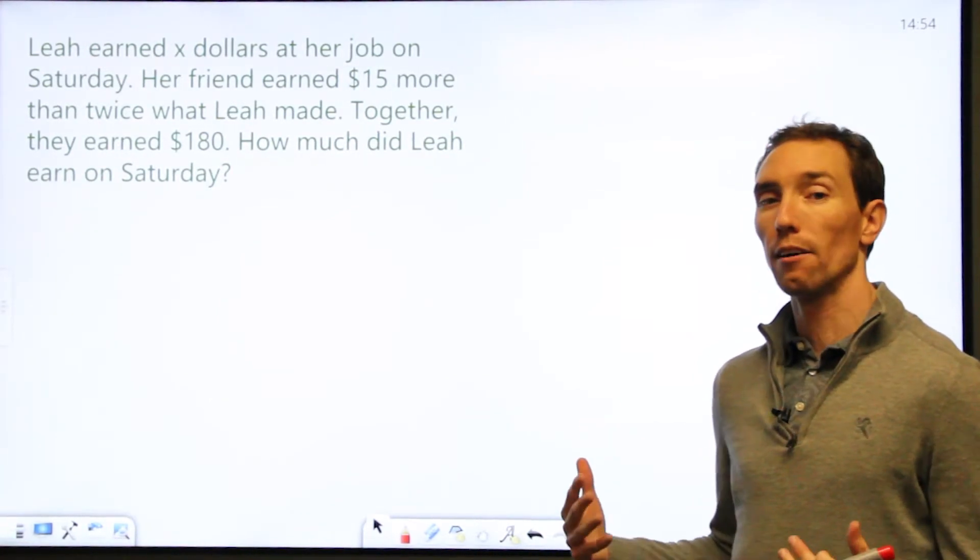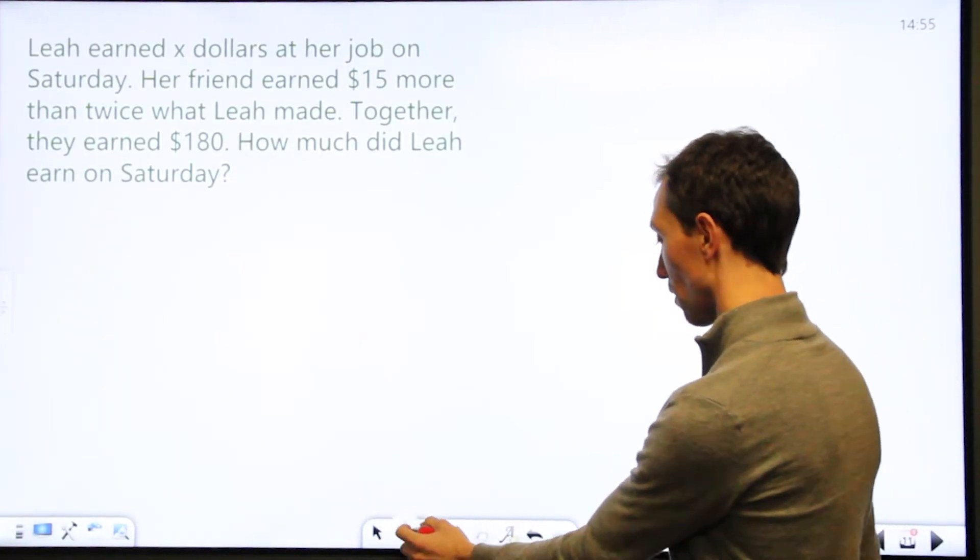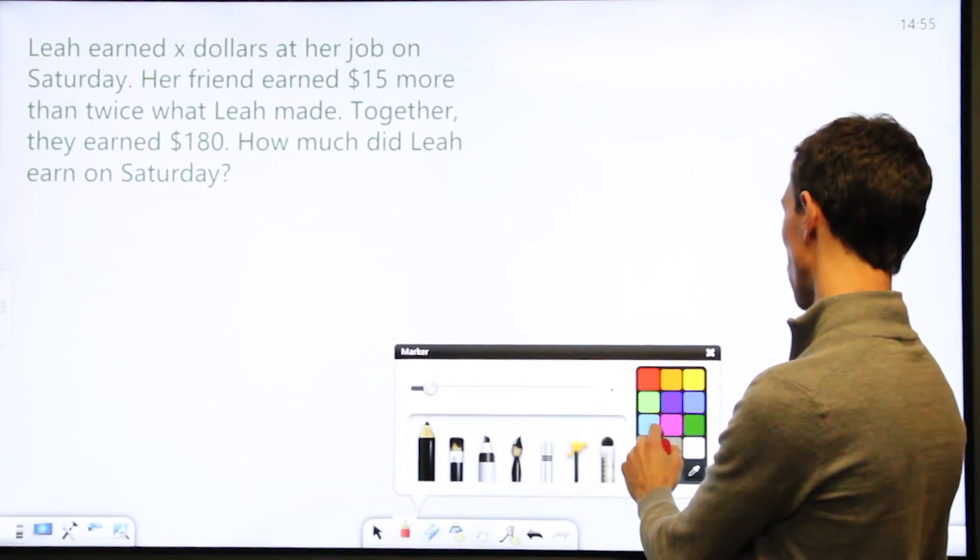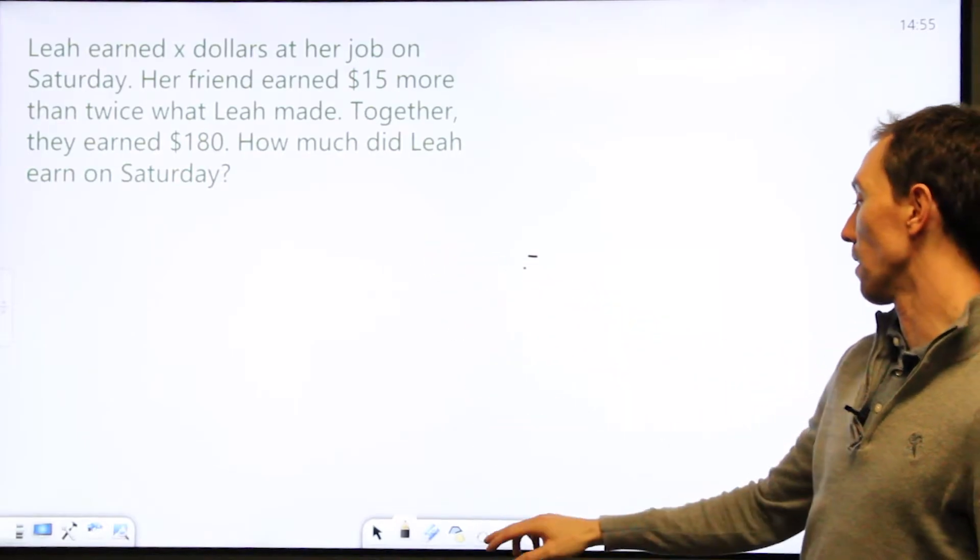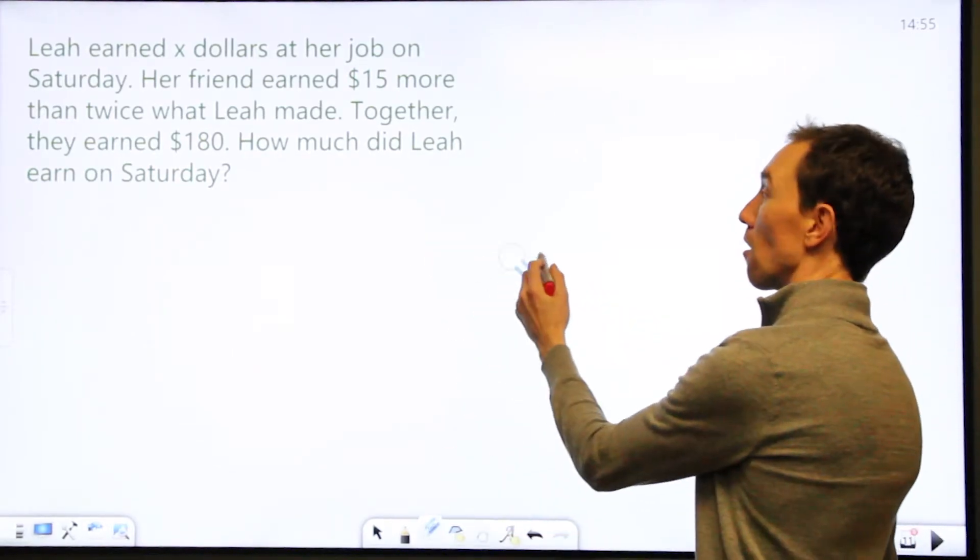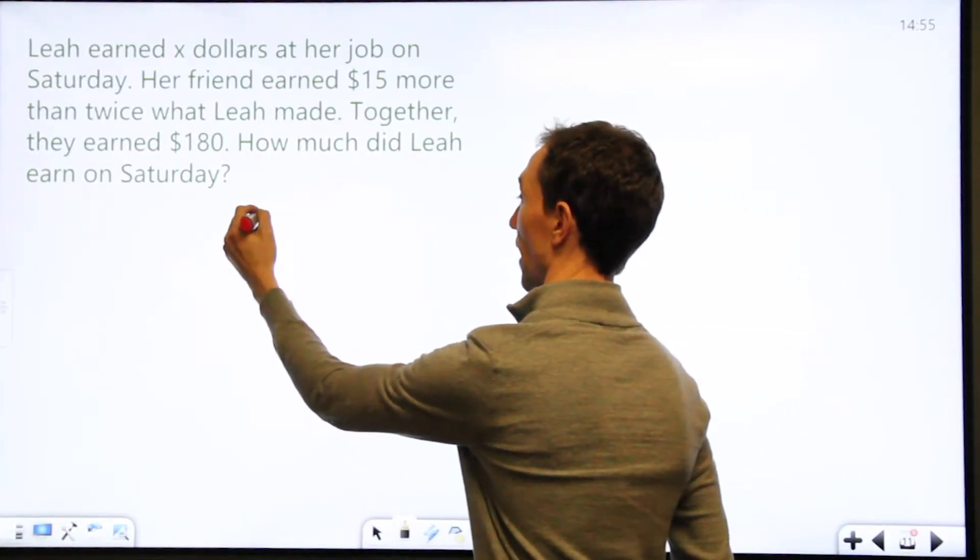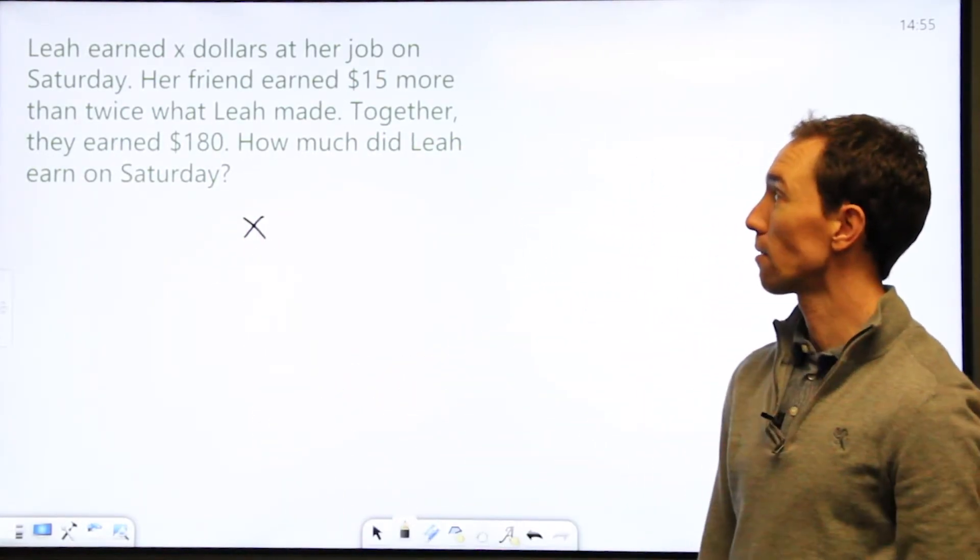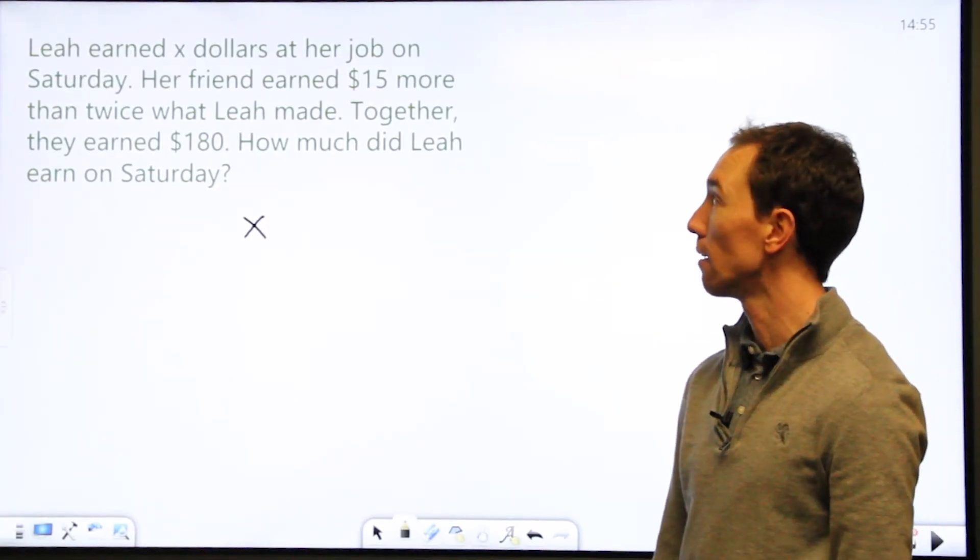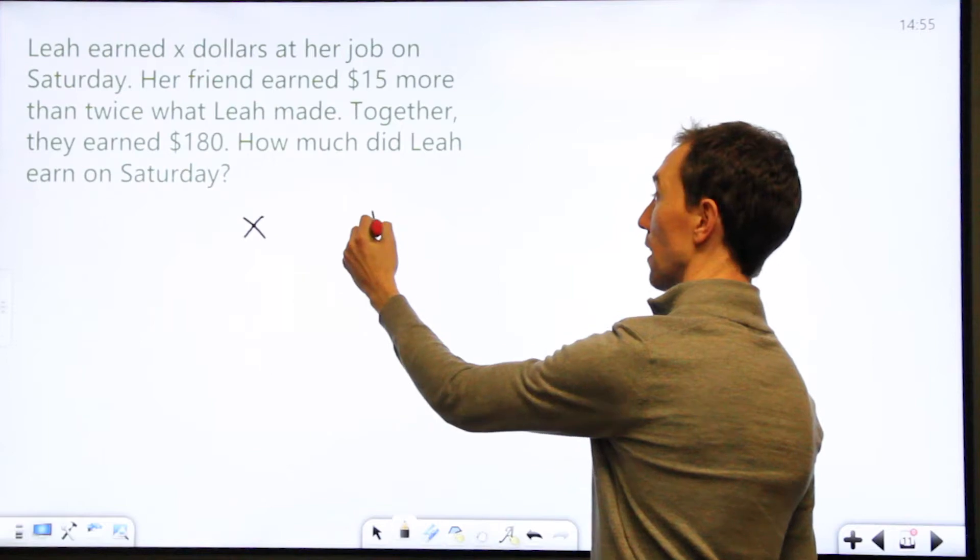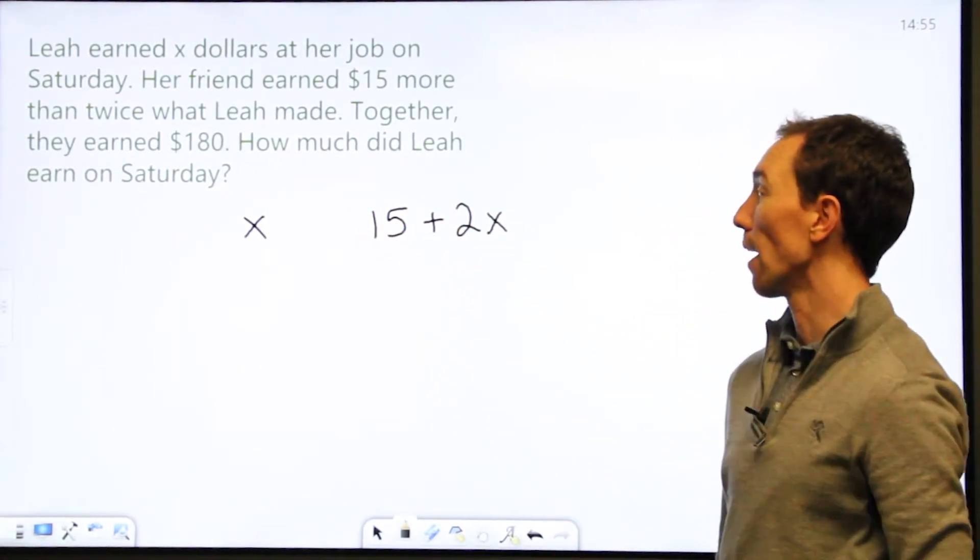So I need to figure out how to write all this in an equation so I can solve it. I'm going to choose a color here and I'm going to start writing out the equation that I have. Leah earned X dollars at her job on Saturday. Her friend earned $15 more than twice what Leah made. So 15 more than twice Leah is 15 plus 2x, because more than means plus and twice means two times.